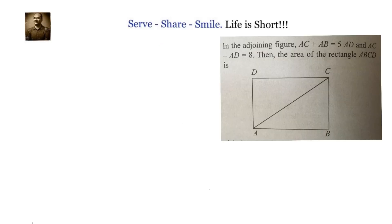Hello friends, welcome back. Hearty welcome to you. Let us look at this problem: in the adjoining figure, rectangle ABCD, AC plus AB equals 5 AD, and AC minus AD equals 8. AC is the diagonal of the rectangle, AB is the length of the rectangle, and AD is the breadth of the rectangle.